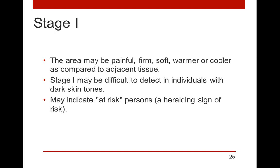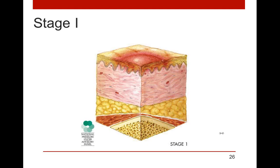Stage one isn't always the first sign of tissue damage, as we've seen with DTI. The area can be painful, may show a change in tissue type, and sometimes patients complain of itching. This is always an indication of an at-risk person and is one of the first signs that a patient is at risk. In our stage one diagram, we see the bone, blood flow in the subcutaneous tissue — there's not a lot of damage in the subcutaneous areas, but we do see redness and irritation to the skin, which can be caused by friction, shearing, or pressure. Pay attention to that early redness.